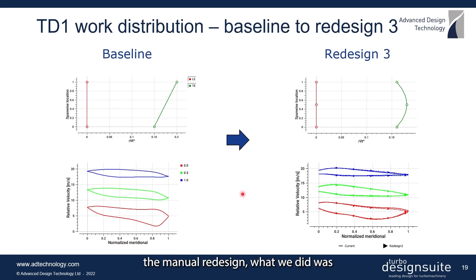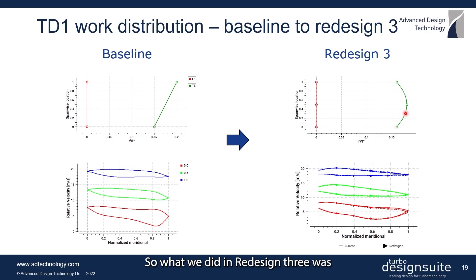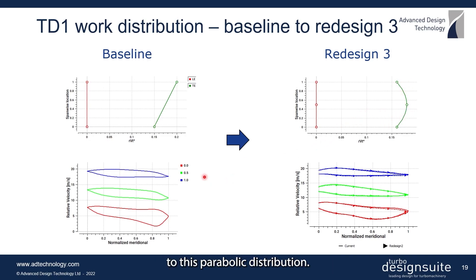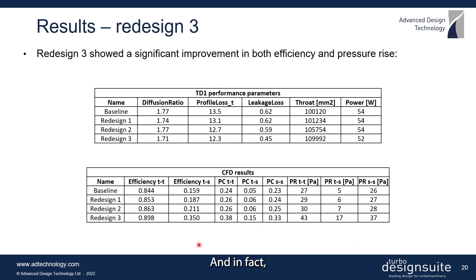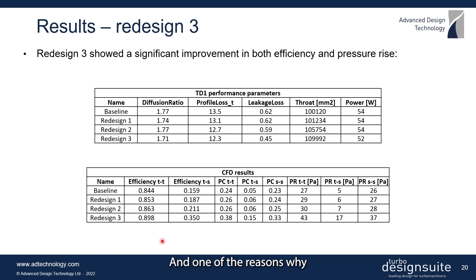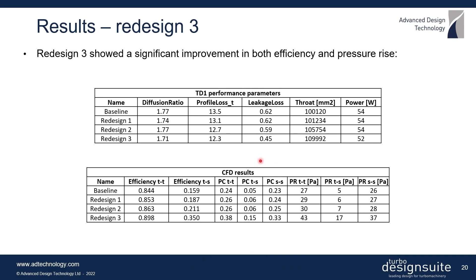In the last step of the manual redesign, we changed the spanwise RV-theta distribution from forced vortex to parabolic. In redesign 3 we kept the same loading as redesign 2 but changed the spanwise RV-theta to this parabolic distribution. The relative velocity distribution changes only slightly from redesign 2 since we didn't change the blade loading, only the spanwise work. This change has quite a major effect — it reduces both profile and leakage losses, significantly improving efficiency and pressure rise. The key reason is that by unloading the tip region using the parabolic spanwise RV-theta distribution, you reduce tip leakage losses, which has a major effect on overall efficiency.